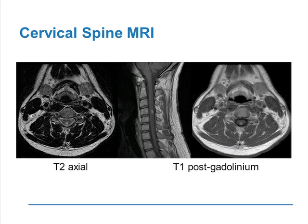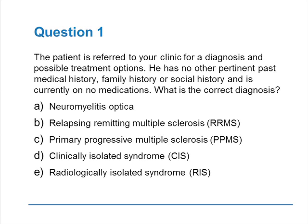The MRI, as you can see on the left, is a T2 axial image of his cervical spine showing increased T2 signal in the posterior aspect at C4. The post-gadolinium images, both sagittal and axial, show that they did enhance at the time of the image. The patient is referred to your clinic for a diagnosis and possible treatment options. He has no other pertinent past medical history, family history, or social history — otherwise a very healthy individual, in fact was playing basketball the day before this happened — and he is currently on no medications.